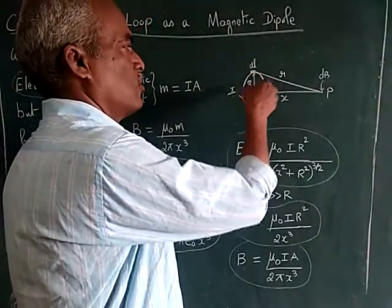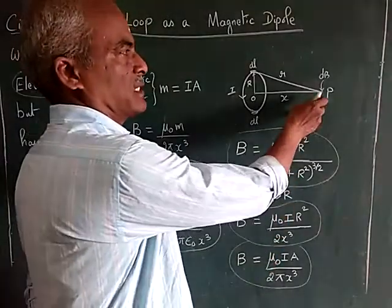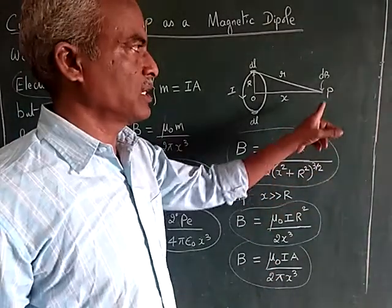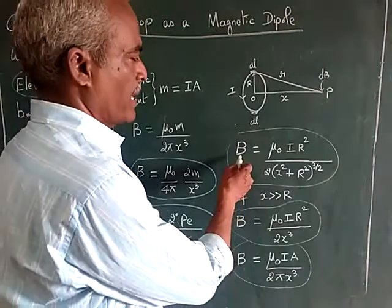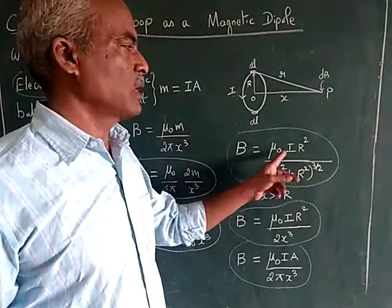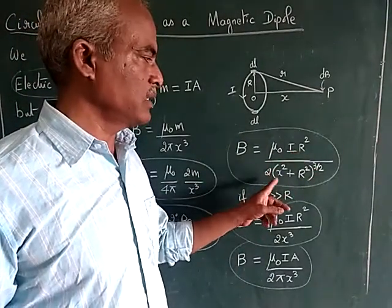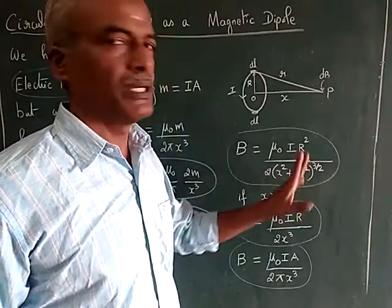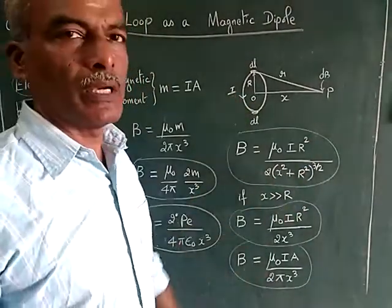So we have a circular loop carrying a current i and we are interested in the magnetic field at a distant point, say P. And the magnetic flux density is given by mu naught i r squared divided by 2 into x squared plus r squared to the power 3 by 2. This relation already we have derived.